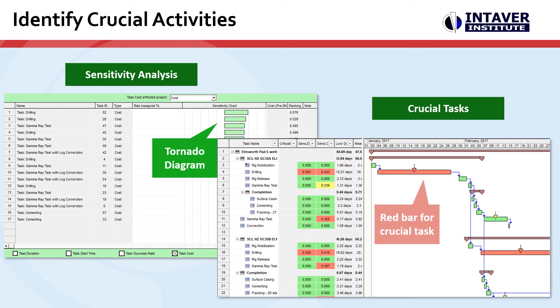The crucial task view takes that same analysis and plots it on the Gantt chart, making it easy to identify activities in the schedule where we should focus optimization efforts.